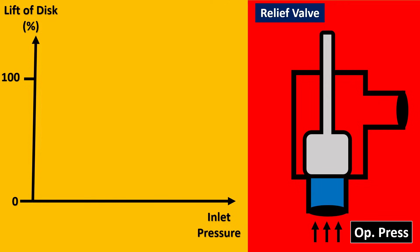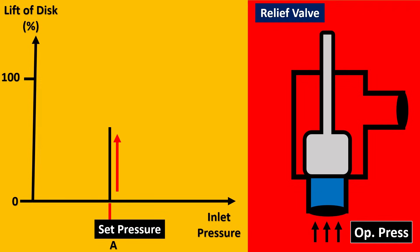Now let the operating pressure hit the disc of the relief valve, but until it reaches the set pressure — let us call it point A — your disc will never open. Once your set pressure is reached, the relief valve disc starts opening to some percentage and eventually opens to its 100% value.